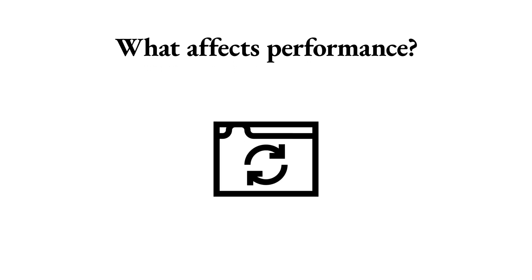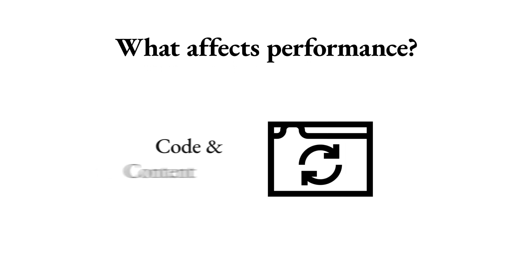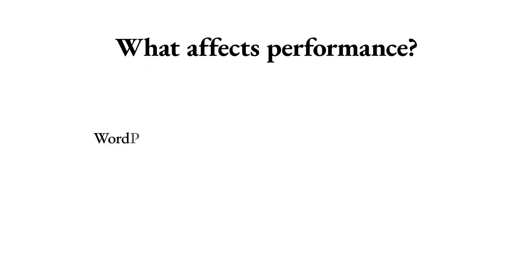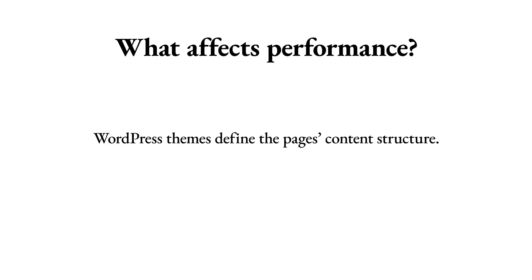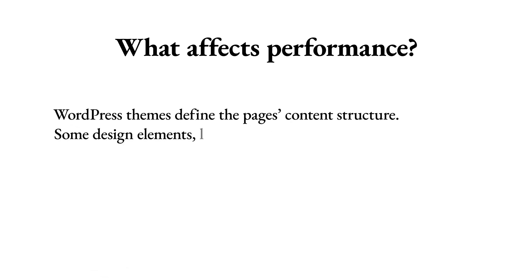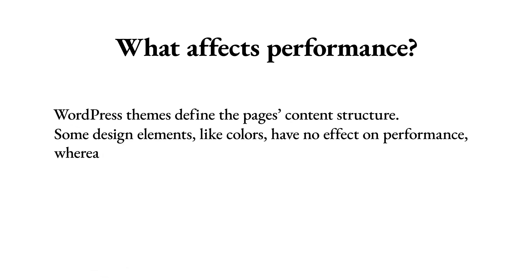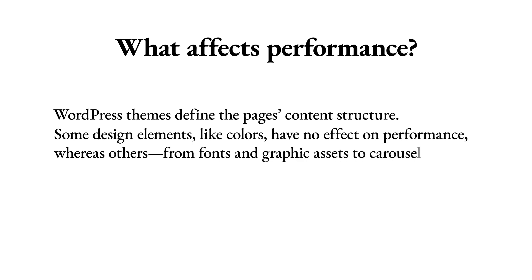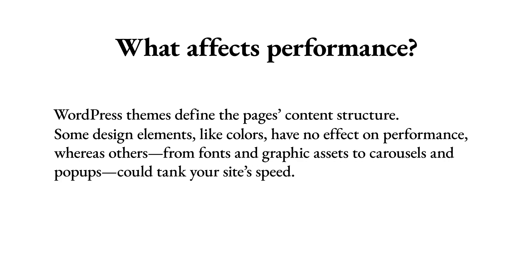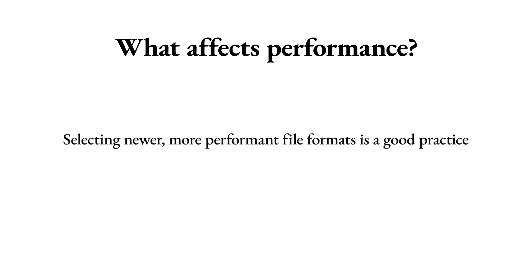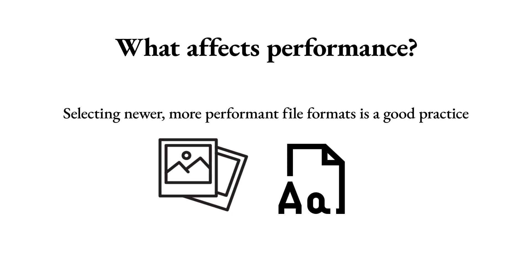Let's start with software, which covers code and content. WordPress themes define the page's content structure. Some design elements, like colors, have no effect on performance, whereas others — from fonts and graphic assets to carousels and pop-ups — could tank your site's speed. Selecting newer, more performant file formats is a good practice when dealing with media and fonts.